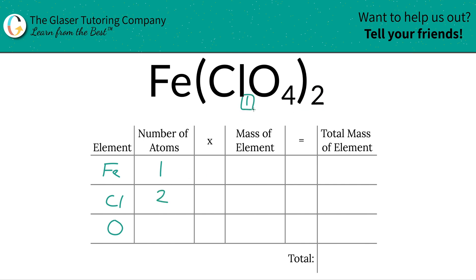All you have to simply do is take that subscript of chlorine multiplied by the outer subscript to find the total. Same thing for oxygen. The amount of oxygen inside the parentheses is 4. You're going to multiply it by the subscript on the outside, so you're going to get a total of 8 oxygens.